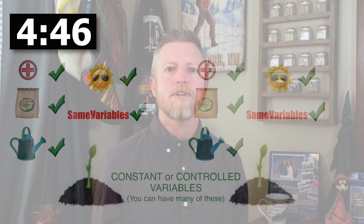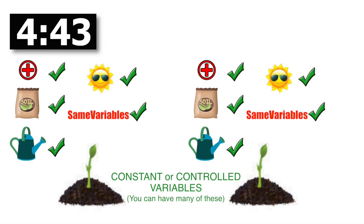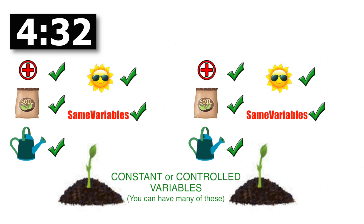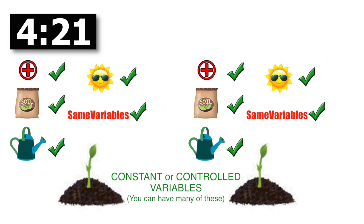In our last video we looked at an experiment: does fertilizer have an effect on plant growth? This slide shows the constant or control variables — the variables that remain the same in the experiment. To keep conditions equal across all plants, each one gets the same amount of water, the same soil, the same temperature, and they're the same type and age of plant. Those are your controlled or constant variables.